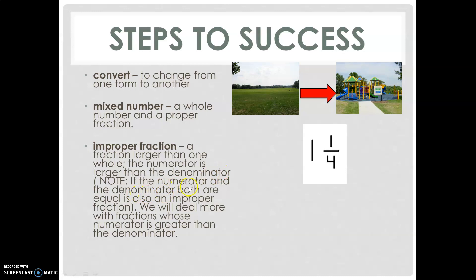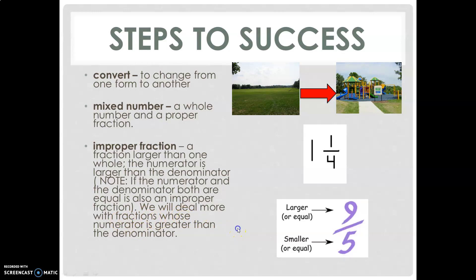Note: if the numerator and the denominator are both equal, it is also an improper fraction. We will deal more with fractions whose numerator is greater than the denominator — for example, nine upon five, where the numerator is bigger than the denominator.